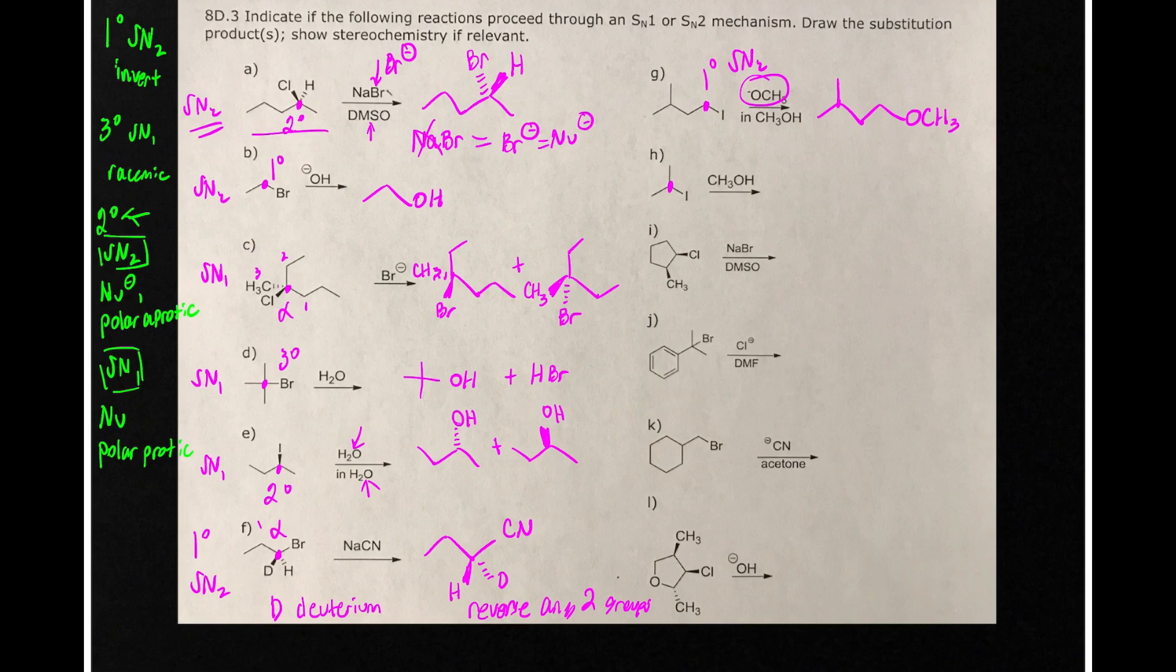Here, we have an alkyl halide that's secondary. There's no stereochemistry, but it proceeds by SN1 because this is a polar protic solvent. And so the products here are just going to be OCH3 and some acid.